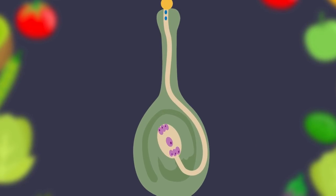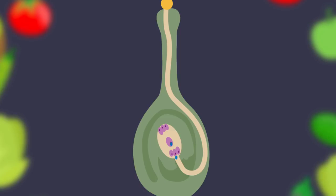The male sex cells travel from the pollen grain down the pollen tube to the female ovule. Here one male sex cell fuses with the female egg, fertilizing it. This develops into a seed. The other male sex cell attaches to two cells in the embryo sac, forming an endosperm. This provides the starchy food for the seed to grow.